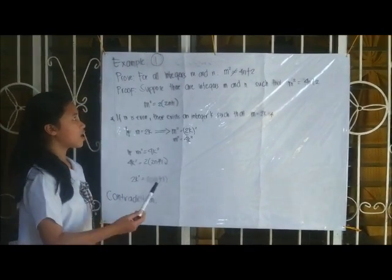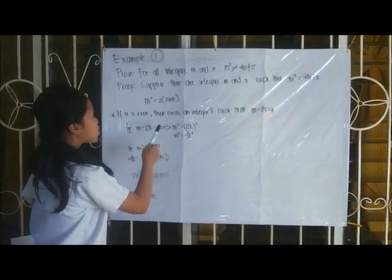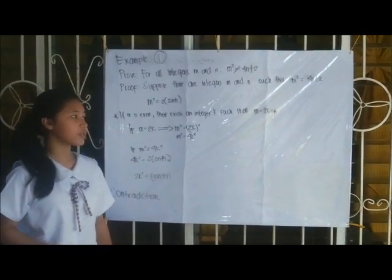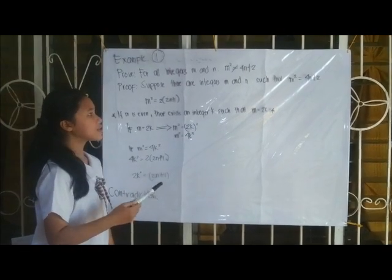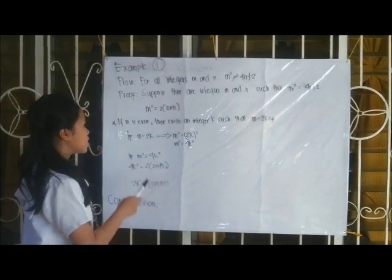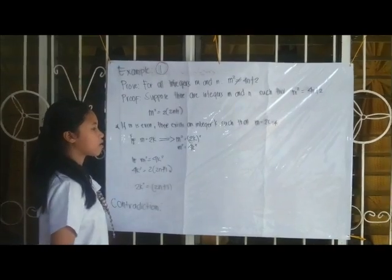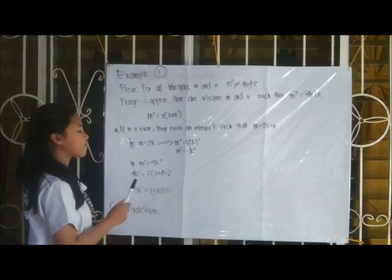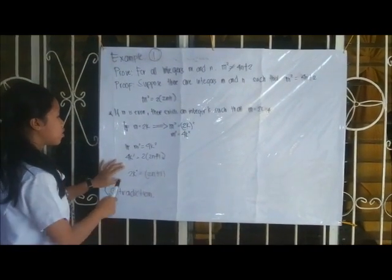To make m squared even, we factor 4n plus 2 into 2 times (2n plus 1). So m squared is even, which means m is even as well. If m is even, there exists an integer k such that m equals 2k. So m squared equals (2k) squared, which gives m squared equals 4k squared. Since m squared equals 4k squared, we can substitute 4k squared for 4n plus 2.